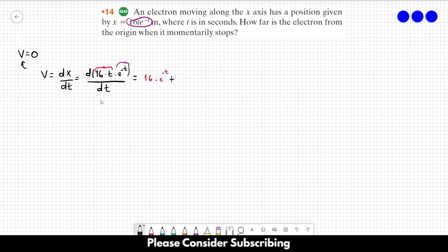So plus the first equation, 16t, times the derivative of the second one. But the derivative of e to the power of minus t is just minus e to the power of minus t.